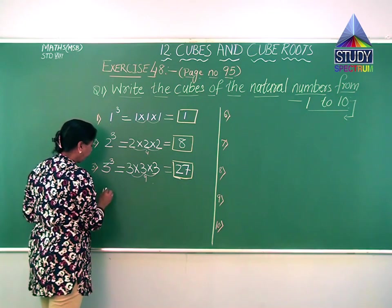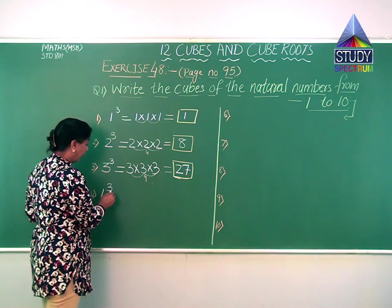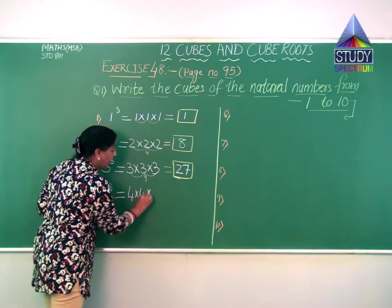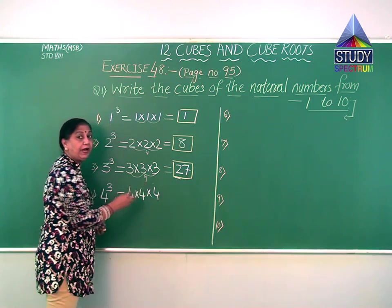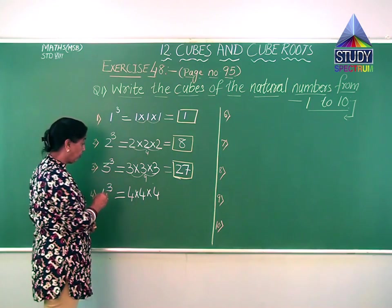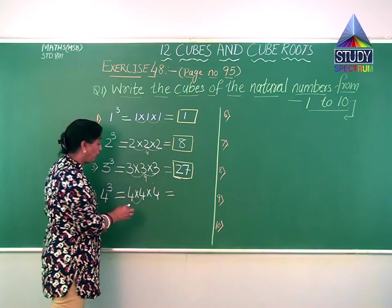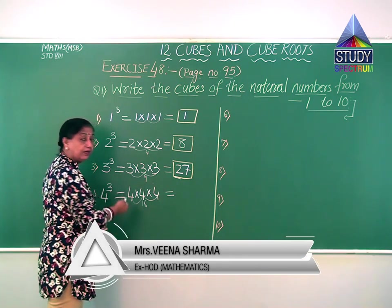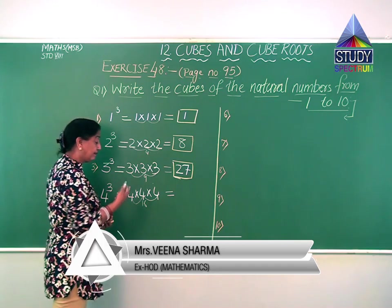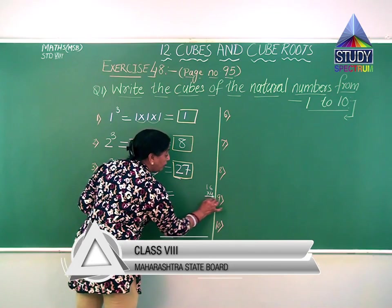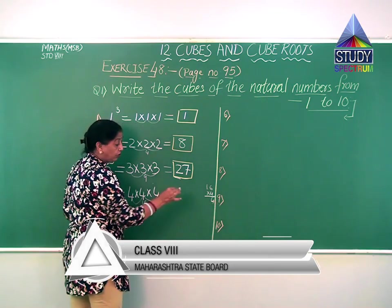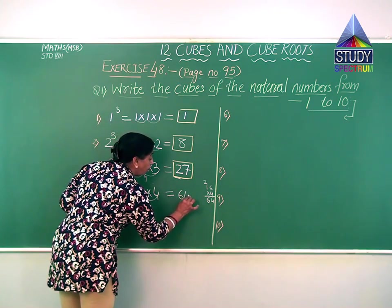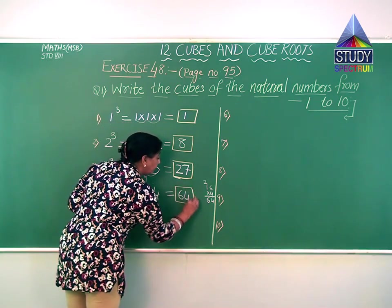The next natural number is 4. We have to find the cube of 4, so I write the power 3. To find the cube, the same number is multiplied three times: 4 into 4 gives 16, then 16 into 4. Doing the working: 4 sixes are 24, carry 2, 4 ones are 4 plus 2 is 6. So the cube of 4 is 64.